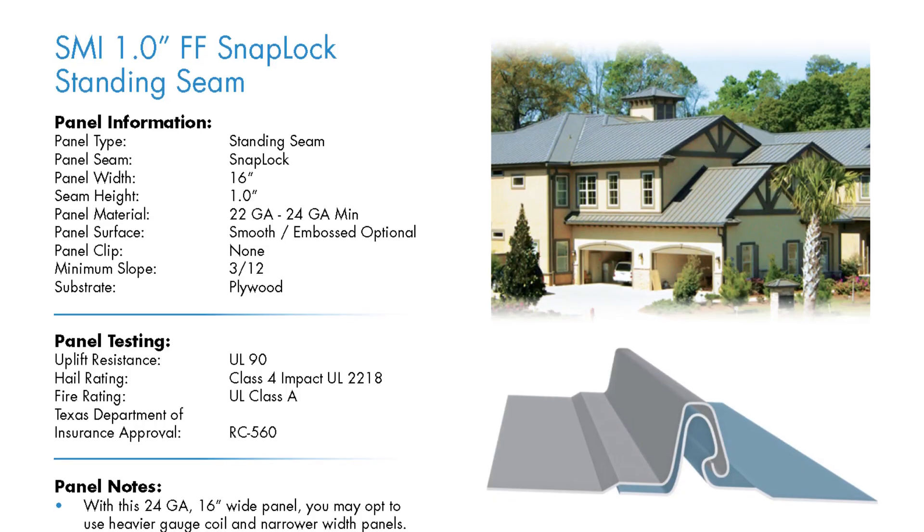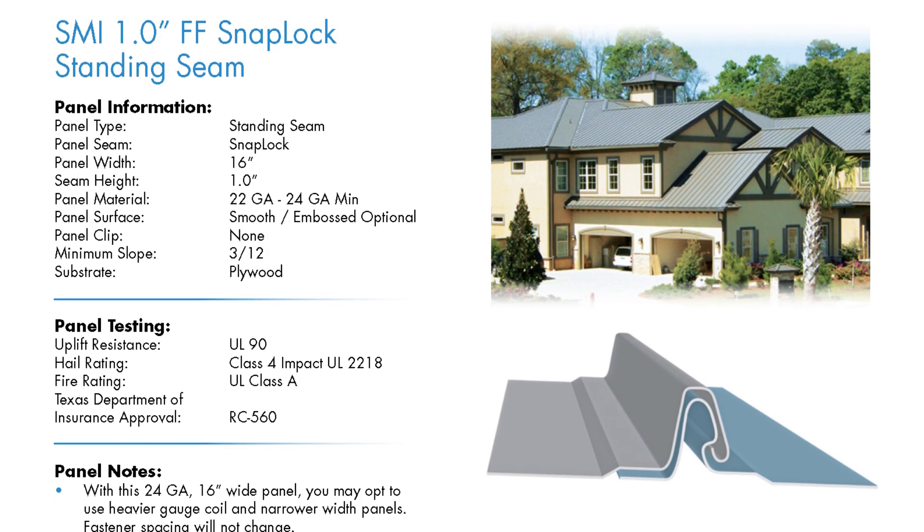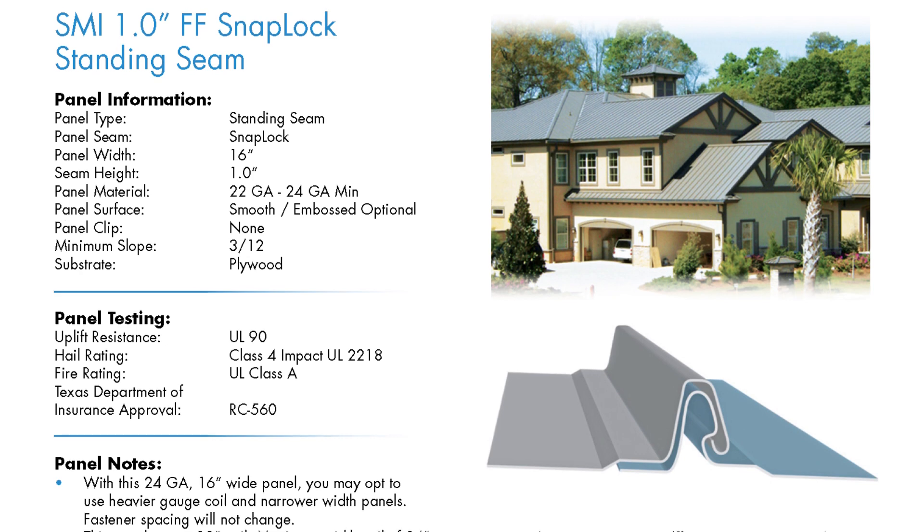When it comes to snap lock panels, most of the industry — and depending on which panels you use with Sheffield — you don't want to go below a 3/12. Some of the panels we have are rated to go below a 3/12, but not lower than a 2/12 when it comes to snap lock panels. Certain panels that are snap lock, like the one-inch fastener flange, are 3/12 or above, period.